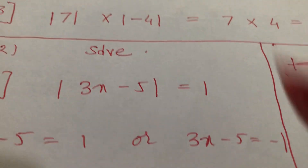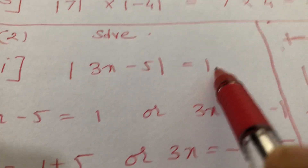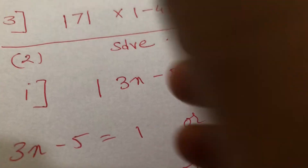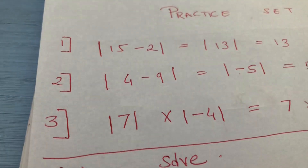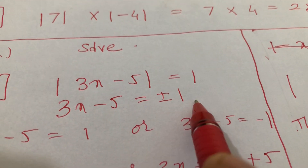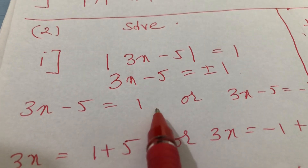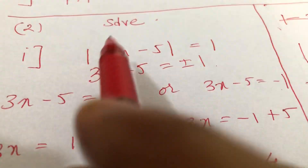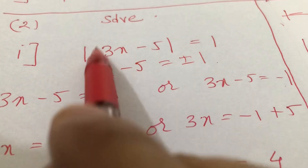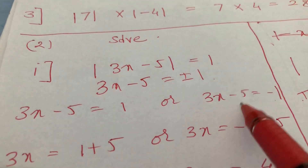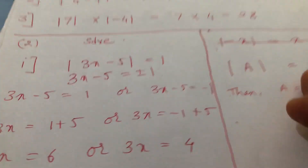In the same way, we have mod of (3x minus 5) equals 1. When the mod sign goes away, 3x minus 5 equals plus or minus 1. That means 3x minus 5 equals 1, or 3x minus 5 equals minus 1.